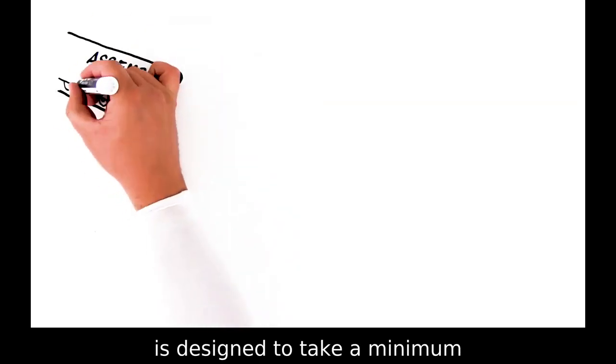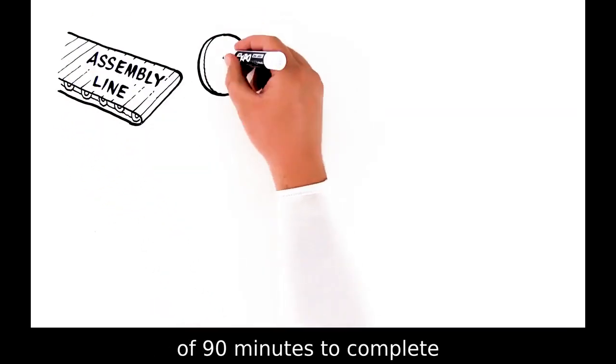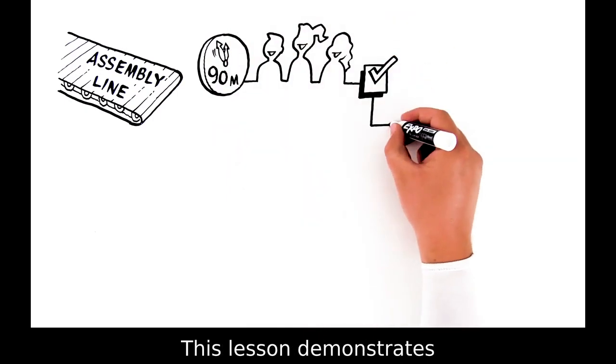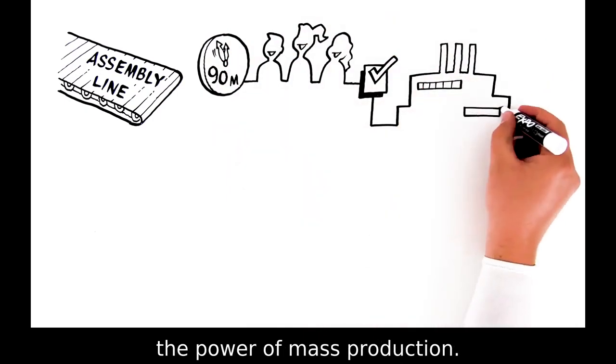Assembly line is designed to take a minimum of 90 minutes to complete for students of all ages using low-cost materials. This lesson demonstrates the power of mass production.